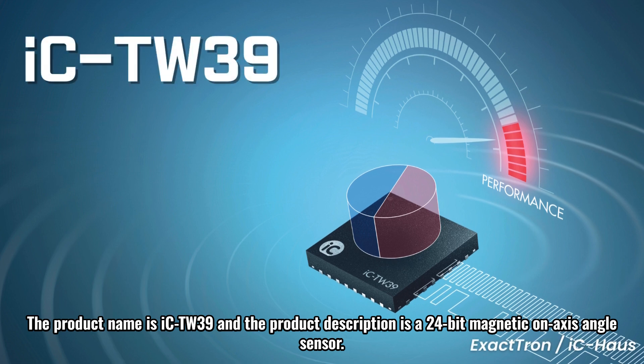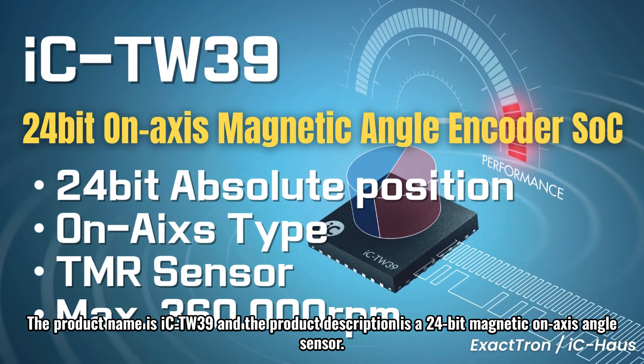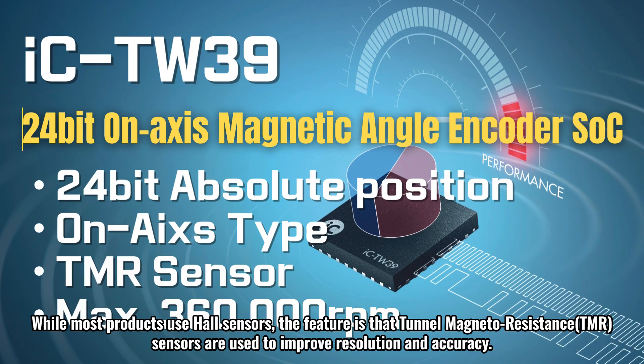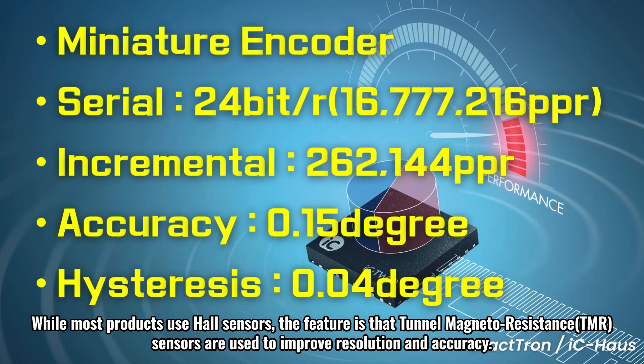The product name is IC-TW39 and the product description is a 24-bit magnetic on-axis angle sensor. While most products use hall sensors, the feature is that tunnel magnetoresistance TMR sensors are used to improve resolution and accuracy.